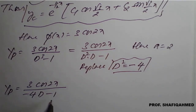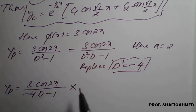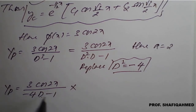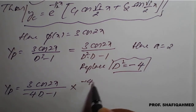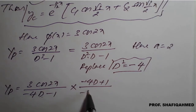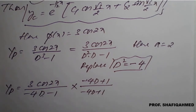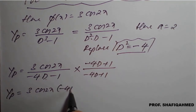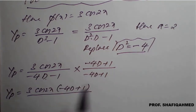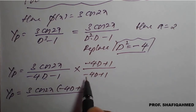The denominator still has d in it, so we rationalize the denominator by multiplying by the conjugate. The conjugate of (-4d - 1) is (-4d + 1). Multiply numerator and denominator by (-4d + 1), giving numerator 3cos(2x)·(-4d + 1) divided by [(-4d - 1)(-4d + 1)], which uses the a² - b² formula.